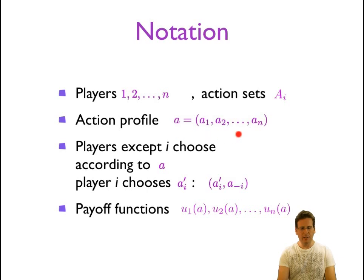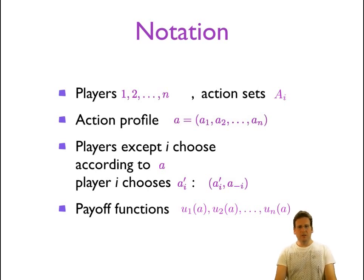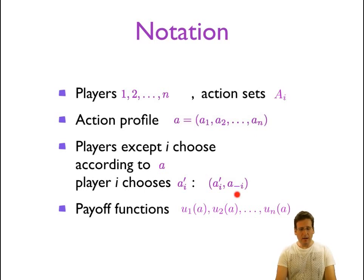An action profile describes a choice of an action for each player, so a1 is player 1's choice of an action, a2 is what player 2 does, and so on. Sometimes we need to refer to an action profile in which all players follow some action profile a, but some player i chooses differently. We denote that as a sub not-i, meaning all players except i choose according to action profile a, but a prime sub i is player i's different action.